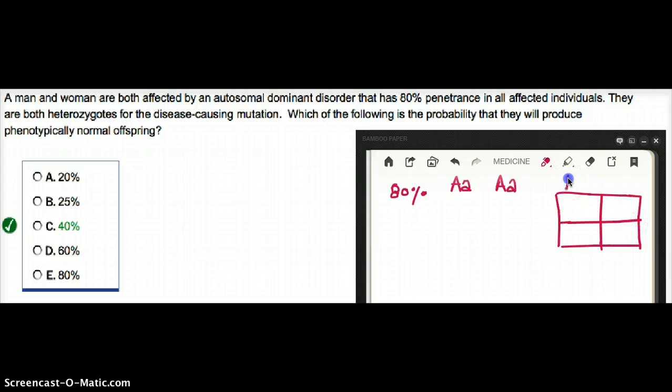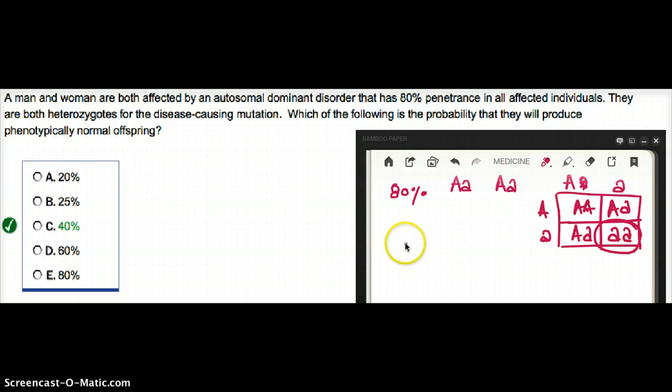If we do this cross, AA by AA, we come up with big A big A, big A small A, big A small A, and small A small A. So, the chances of them producing a phenotypically normal offspring is going to be 1 out of 4, which is going to be 0.25.